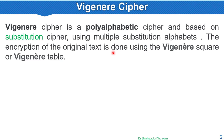Vigenère Cipher is basically a polyalphabetic cipher, or based on substitution cipher. It uses multiple substitution alphabets, and the encryption of the original text is done using the Vigenère Square or Vigenère table.